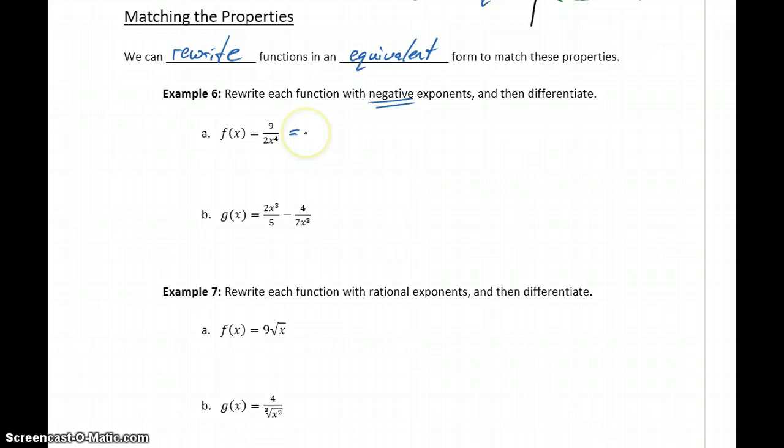So our function 9 over 2x to the 4th could be rewritten as 9 halves x to the negative 4, or another way to write it would be 9x to the negative 4 over 2. Both of these are equivalent expressions. This one's maybe a little more simplified because we get that constant multiple set aside. But if we make that exponent negative by bringing that variable up to the numerator, now we can find f prime of x using a power function. This will become 9 halves times negative 4 x to the negative 5th, or negative 18 x to the negative 5th.